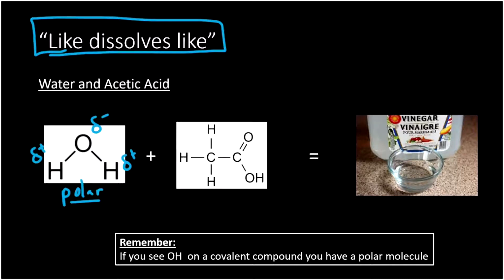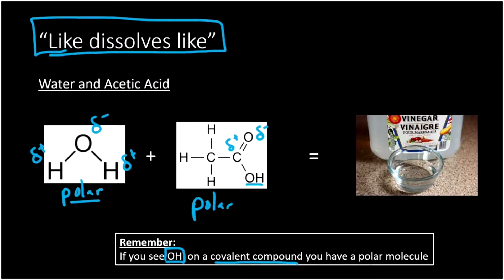When I look at acetic acid — the structure on the right — it also has these partial charges everywhere. This oxygen is partially negative and that carbon is partially positive. And right here we see an OH. Here's a key tip: if you ever see an OH on a covalent compound — one that's all non-metals — you have a polar molecule. The second you see that OH, you know it's polar. So acetic acid is polar, and that OH has partial charges where oxygen is partially negative and hydrogen is partially positive.